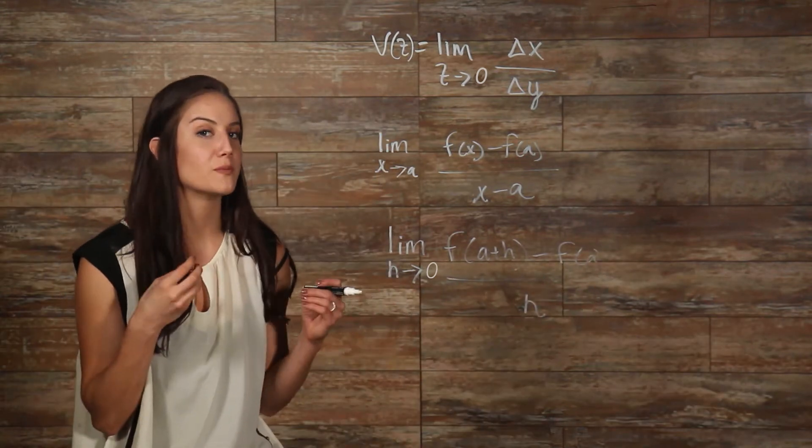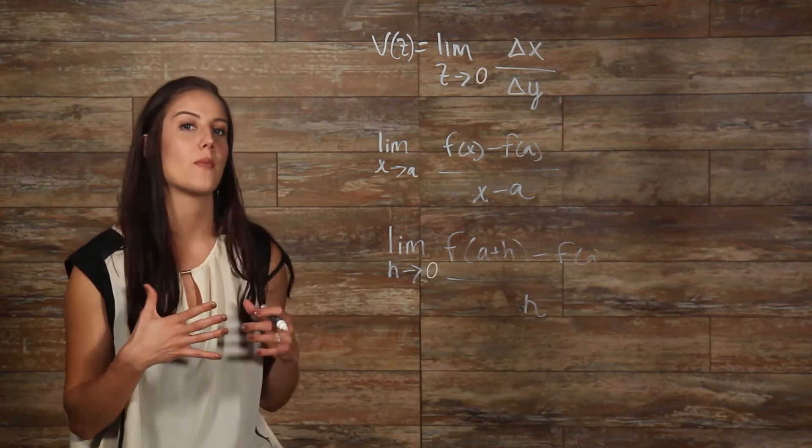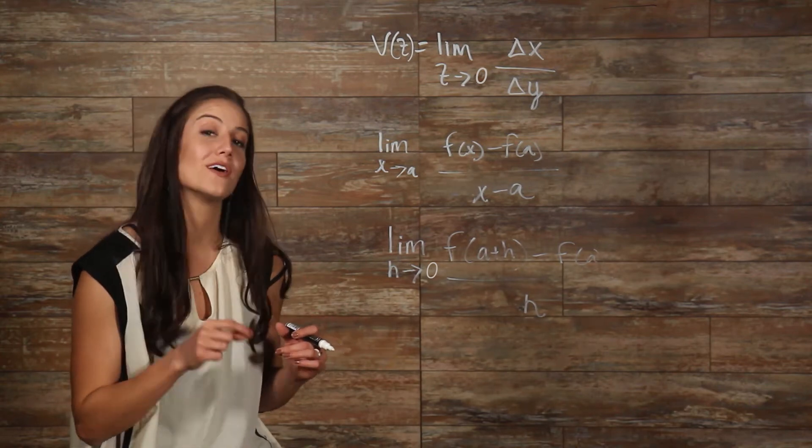You should at this point already be familiar with this limit. This limit will come up all the time. This limit is what is called a derivative.